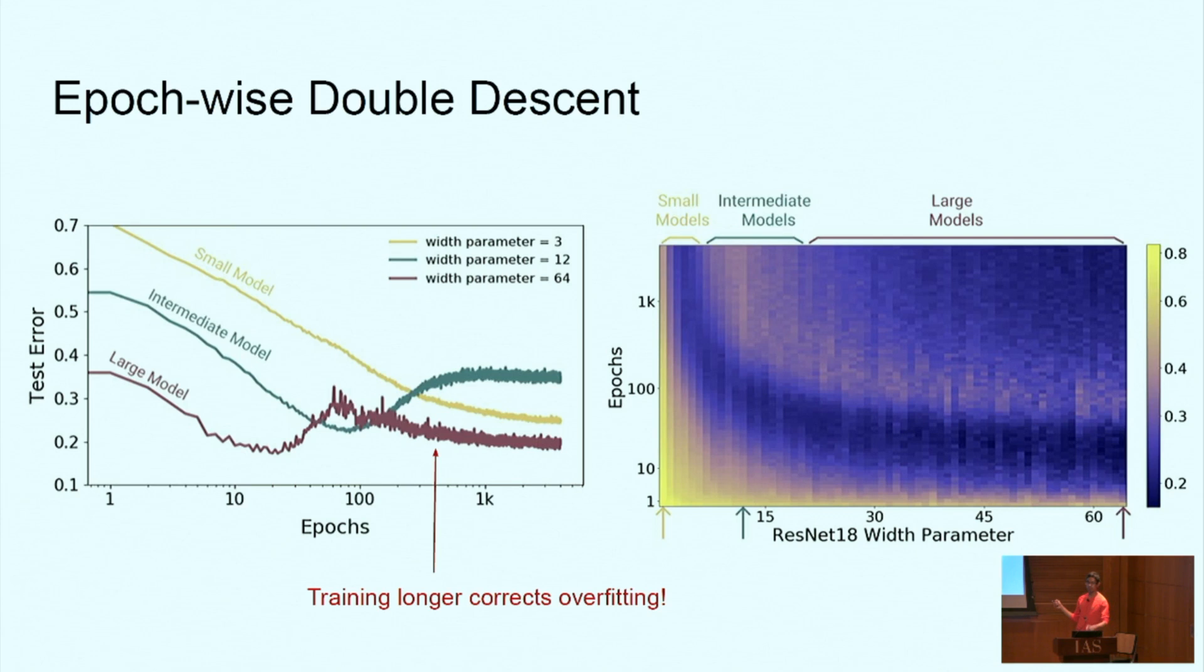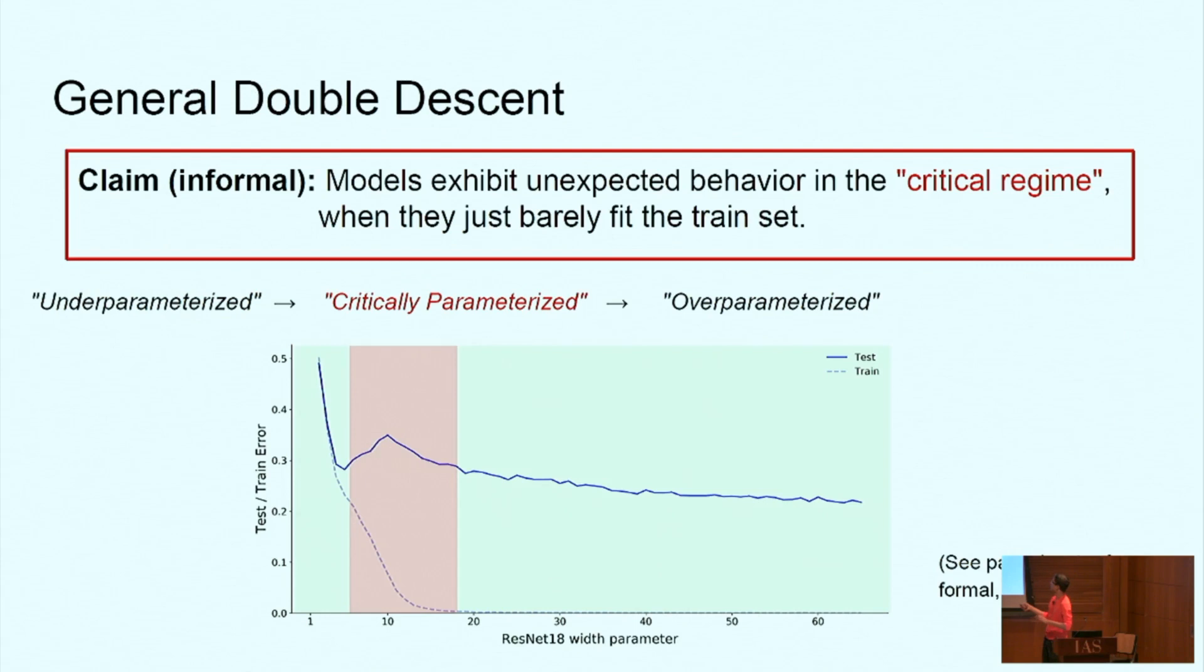So why is this not consistent? The general claim is that weird things happen when we're in this critical regime, when the model and the training procedure is just barely able to fit the train set. And sometimes this weird thing might manifest as a peak in test error, and in particular the peak is accentuated with added label noise. So in these experiments we've added label noise, but we do have a peak even in clean settings without label noise. I think label noise here is a proxy for increasing the amount of model misspecification in the distribution.